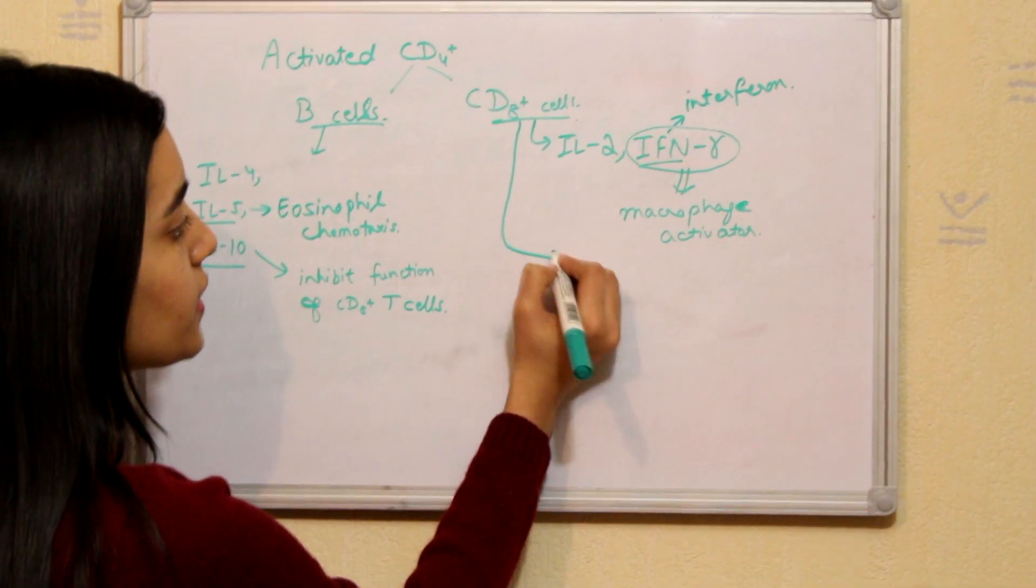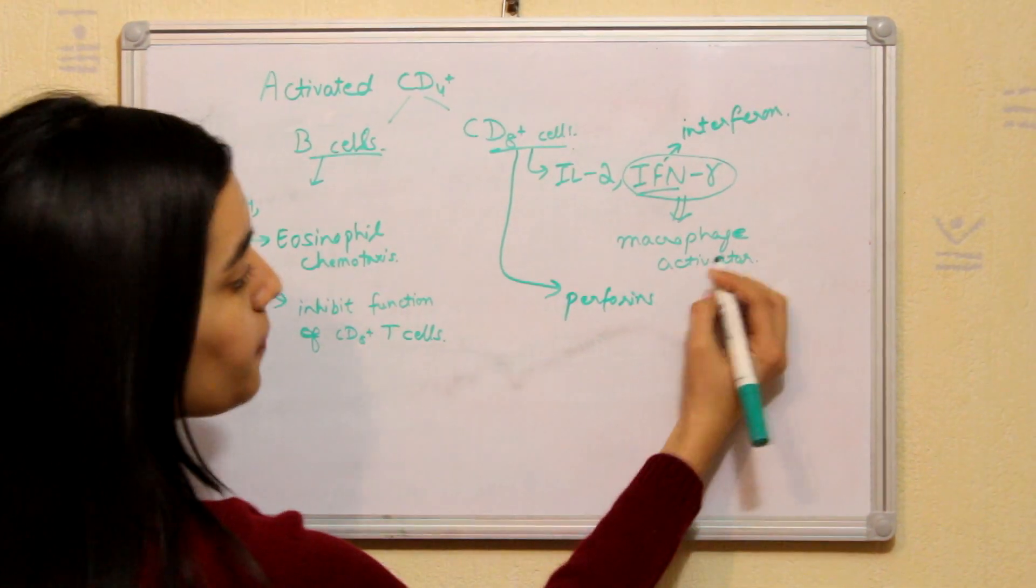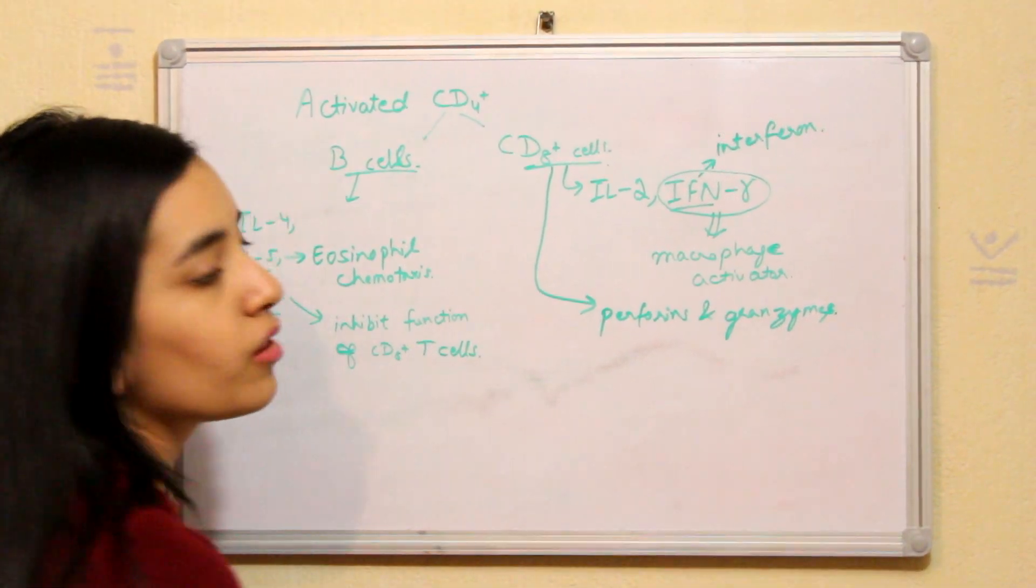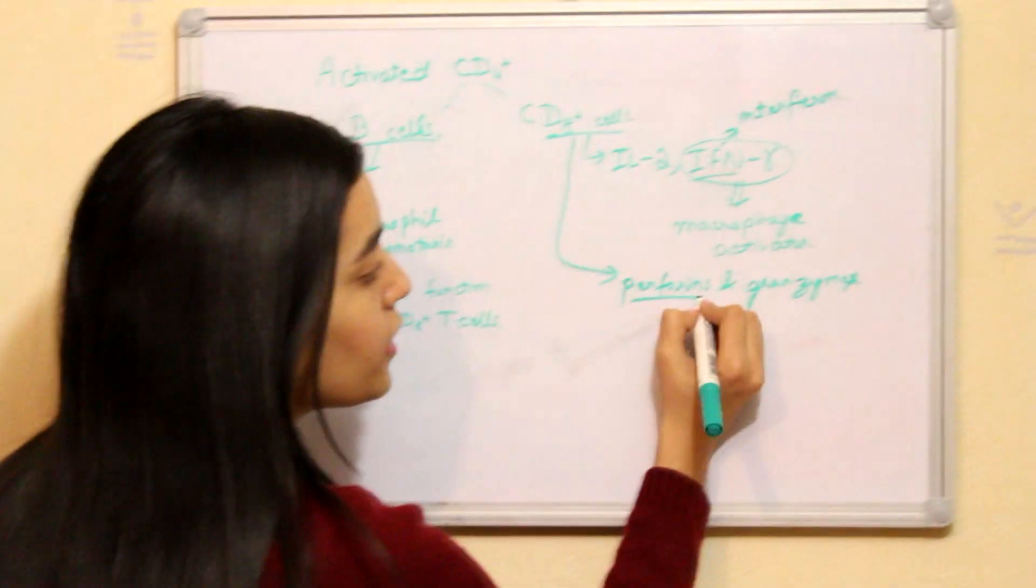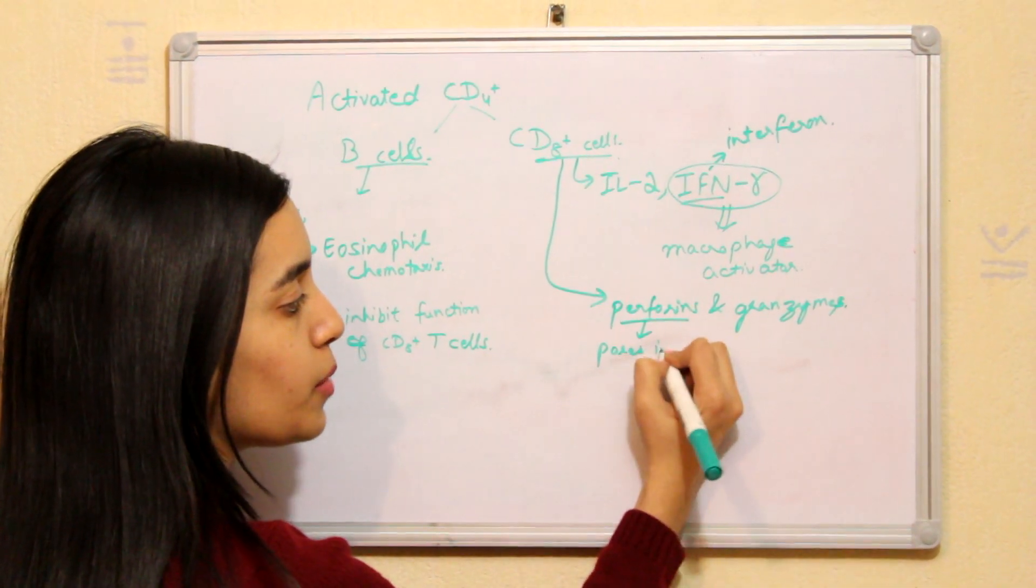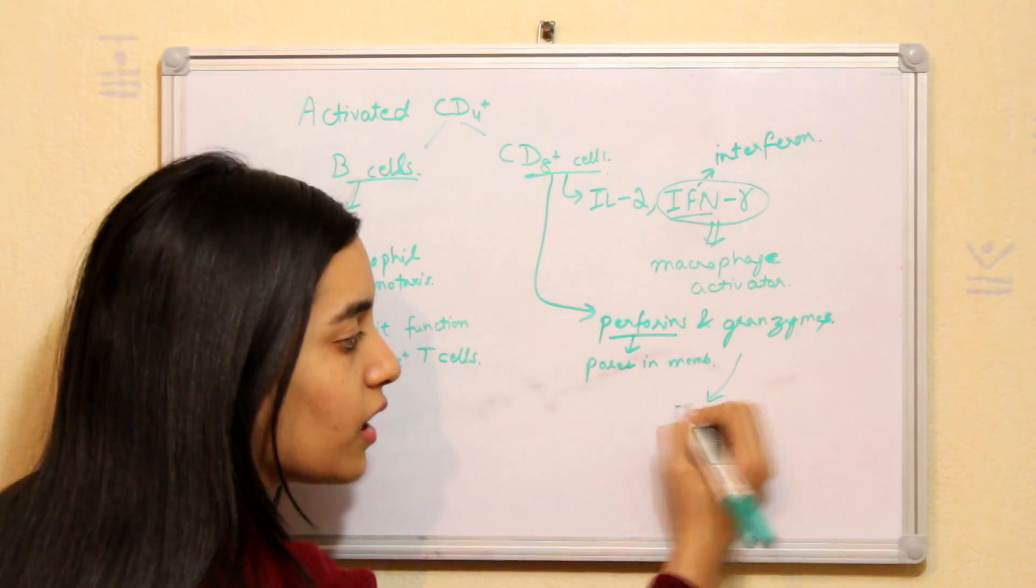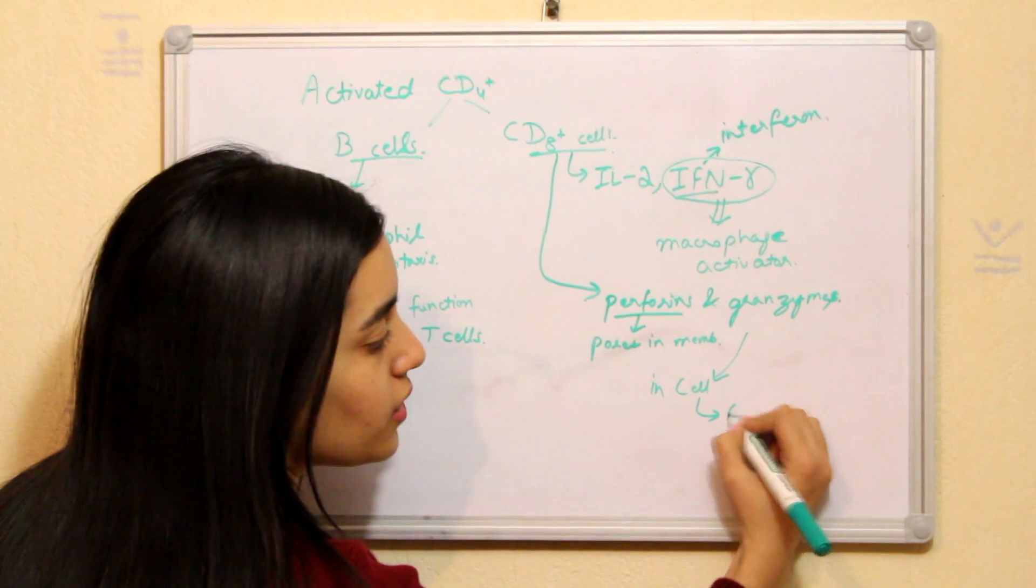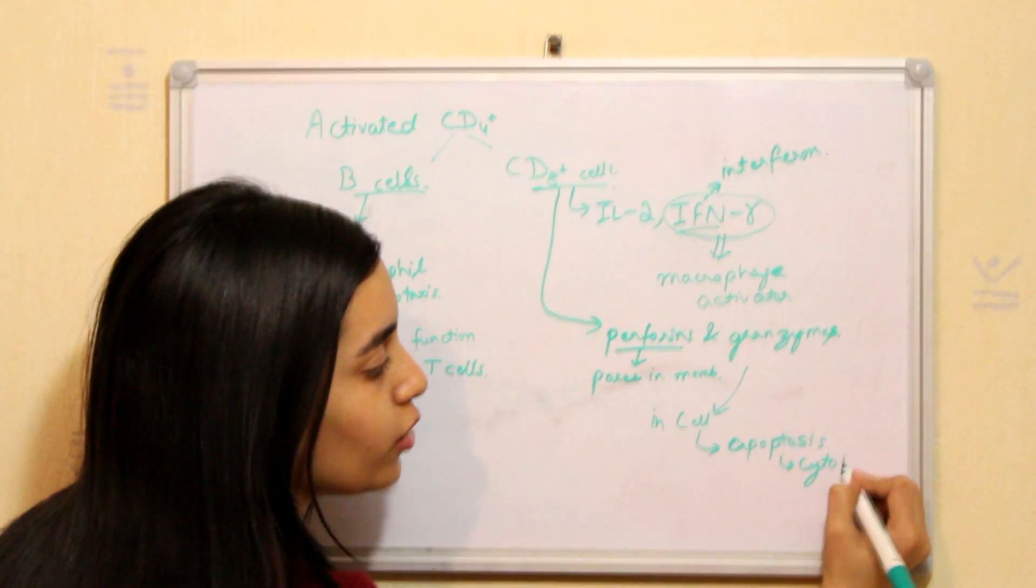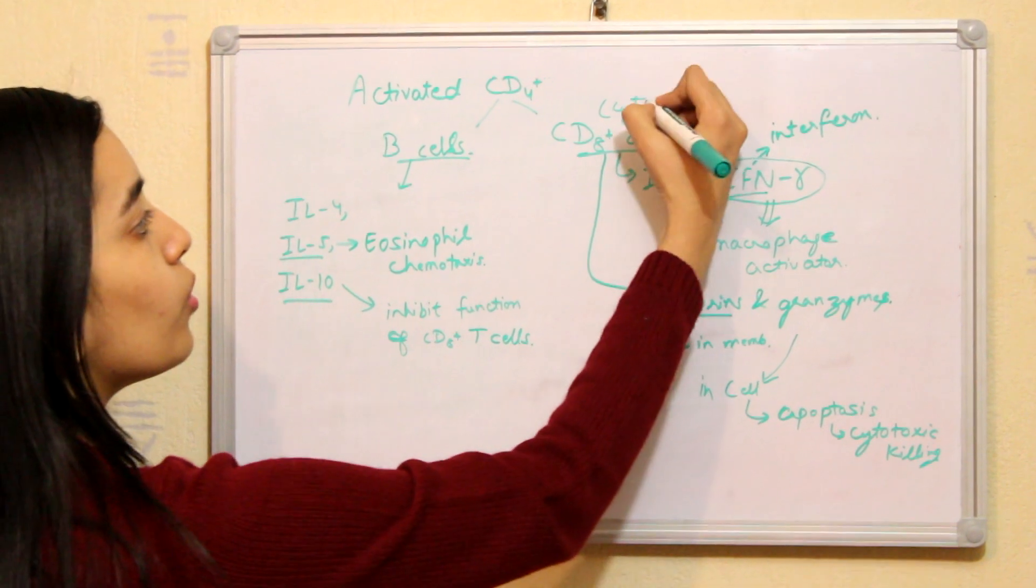Another function of CD8 plus cells is that they release perforins, which are the enzymes, and also granzymes. I have discussed this in the video on apoptosis and necrosis. Perforins, as per the word, they induce pores in the cell membrane, and these pores let the enzymes to come inside the cell, and this causes apoptosis, which is also called cytotoxic killing. Because CD8 plus cells are also called cytotoxic cells.